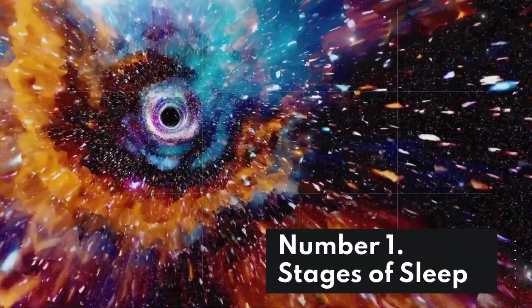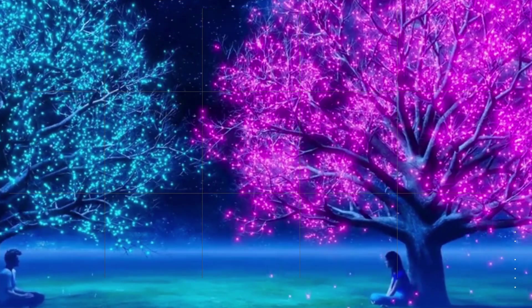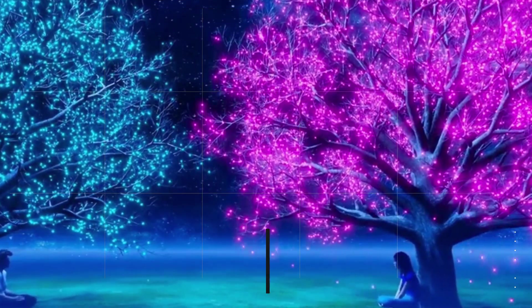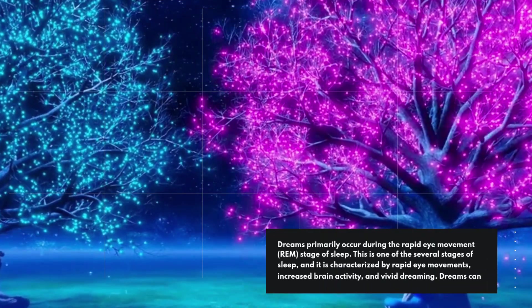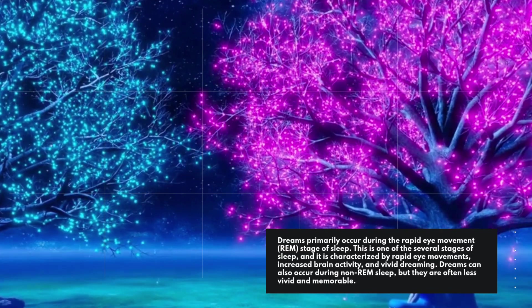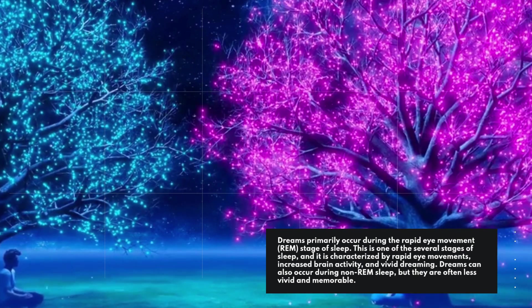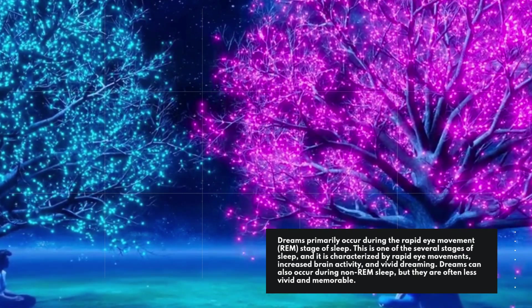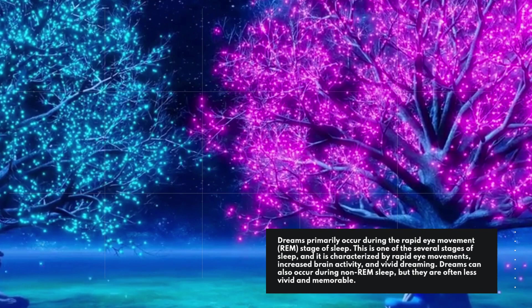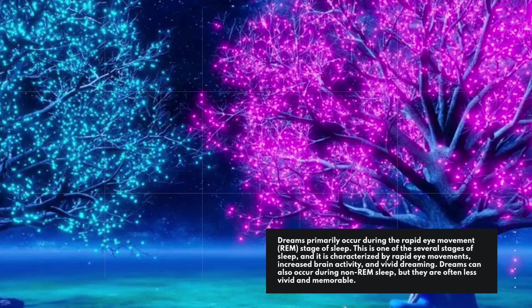Number 1: Stages of Sleep. Dreams primarily occur during the rapid eye movement (REM) stage of sleep. This is one of the several stages of sleep, and it is characterized by rapid eye movements, increased brain activity, and vivid dreaming. Dreams can also occur during non-REM sleep, but they are often less vivid and memorable.